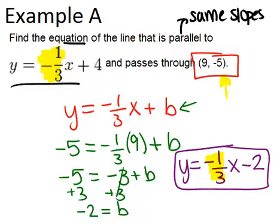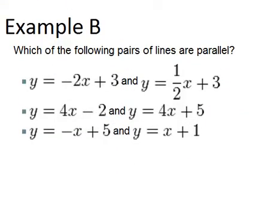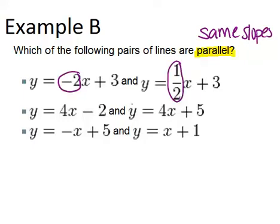All right, let's go on to example B. Which of the following pairs of lines are parallel? Remember, to be parallel means that they have to have the same slopes. So we're looking for slopes, which is the coefficient of x when it's written in the form y equals mx plus b.